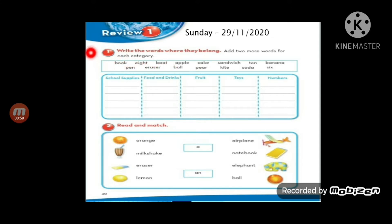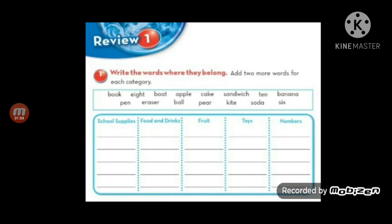Let's start in exercise number one. Review one. Exercise number one: Write the words where they belong. We need to write these words in five groups. Each word, where does it fit? We'll write it in the appropriate group.